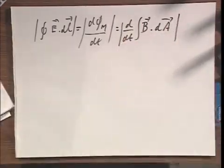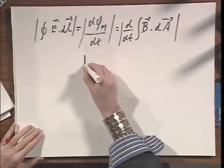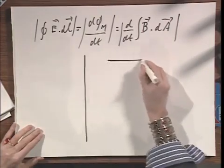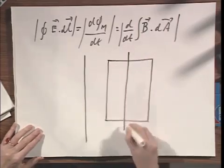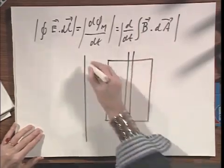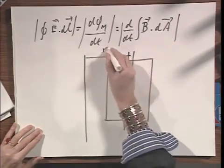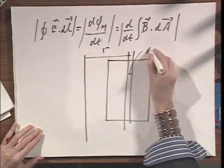And now what I have to do to calculate this properly, I have to take a slice out of here. I take a slice out of here at distance r, and the width of the slice is dr.